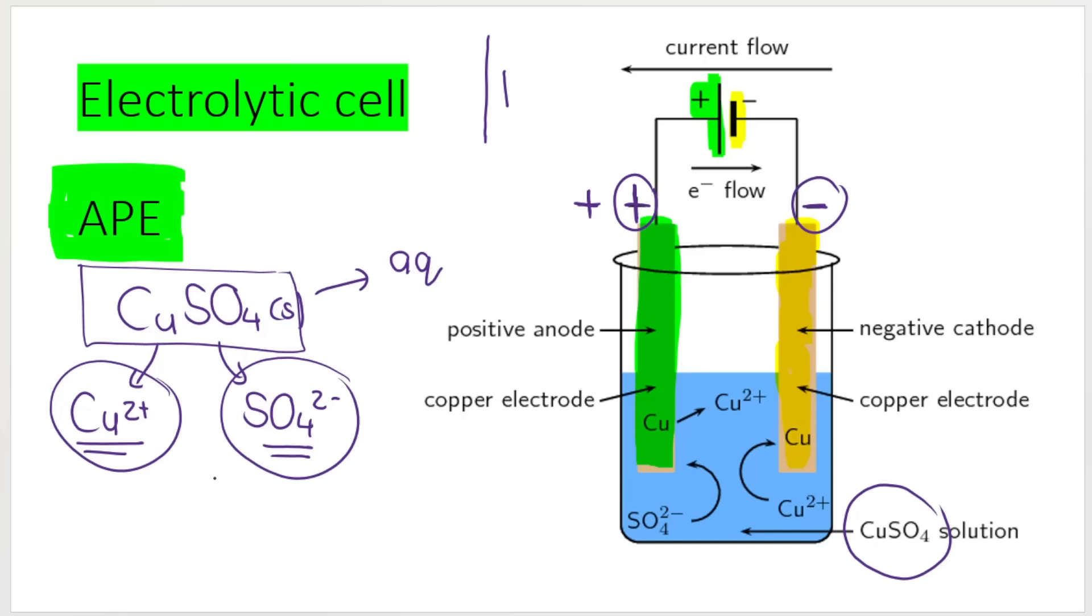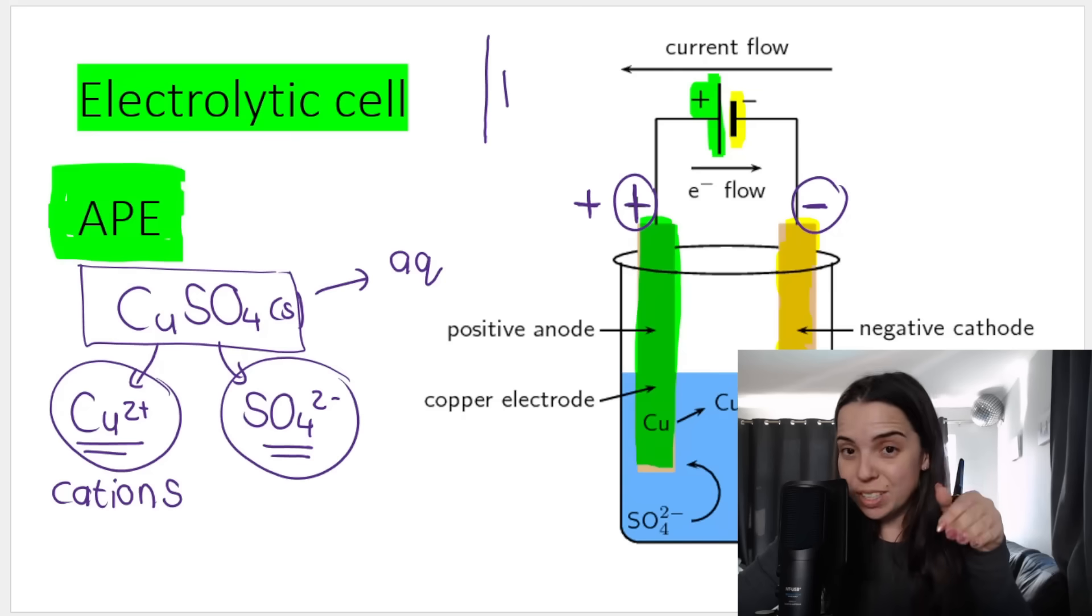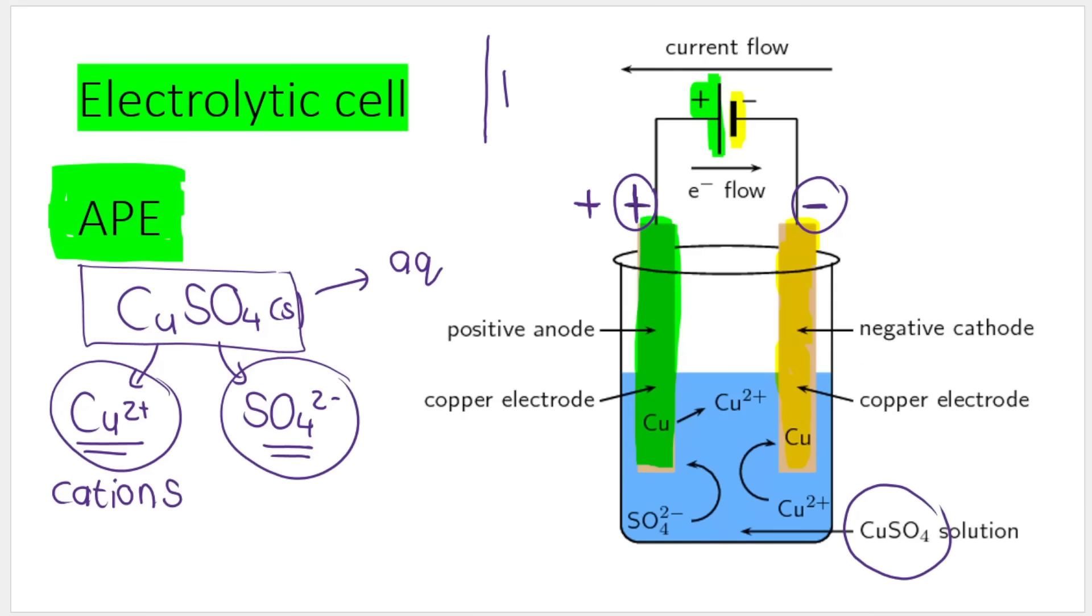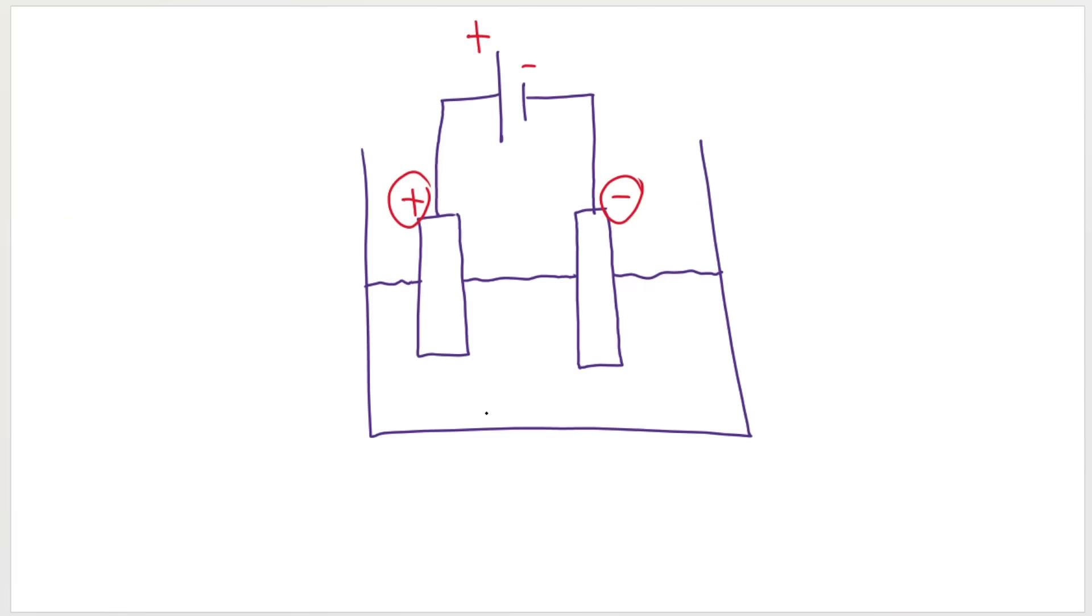Inside my solution, I now have what we call cations. Cations, if you did grade 10 science, if you've watched my videos, you will remember that I said that cations, they are the positive ions. Cations are positive, positive for cats, positive. So cations, they are attracted to the cathode. Why? Because cations are positive, the cathode is negative. So the positive ions, the cations, are attracted to the cathode.